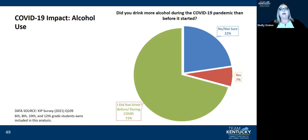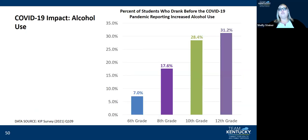For COVID's impact on alcohol use — did you drink more alcohol during the COVID-19 pandemic than before? 71% did not drink before or during COVID, 22% said no or not sure, and 7% said yes. Of students who drank before COVID and reported increased use: 12th grade at 31.2%, 10th grade at 28.4%, 8th grade at 17.6%, and 6th grade at 7%.